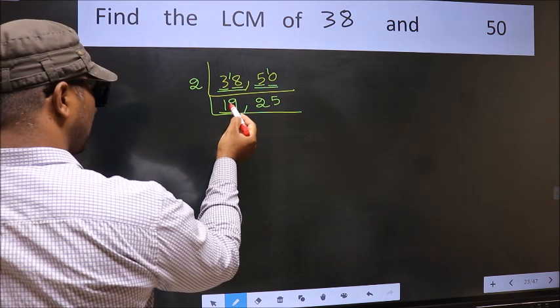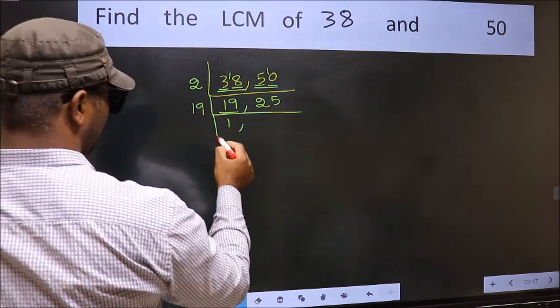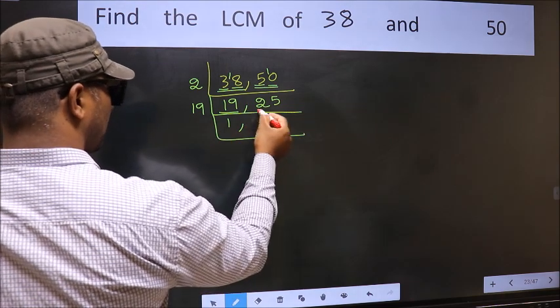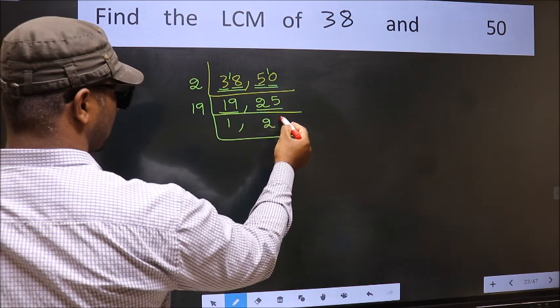Now here we have 19. 19 is a prime number, so 19 once 19. The other number 25, not divisible by 19, so we write it down as it is.